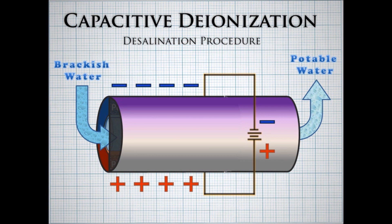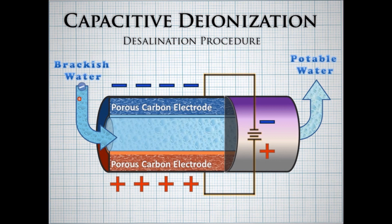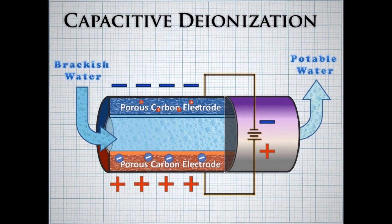So how does this work? We have brackish water that flows in on the left side and potable water flows out on the right. Inside we have two carbon electrodes - one negative, one positive - which when charged attract ions to either side. When the electrode sponges have soaked up all the salt they can hold, we say they are fouled and no more water can be filtered.